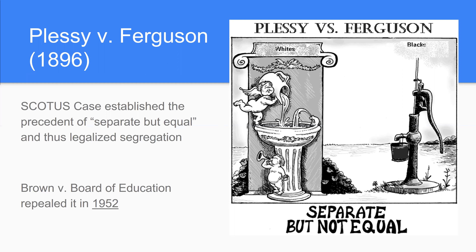Plessy v. Ferguson legalized segregation and the separation of the races. In 1952, Brown v. Board of Education would basically undo Plessy v. Ferguson. But under separate but equal, while equal facilities were supposedly being provided, they were definitely not of equal quality — as this picture here shows. The white water fountain looks fancy and works well, while the one for black people is just a water pump. A source of water is provided for both, but it's definitely not of equal quality.